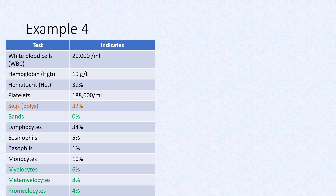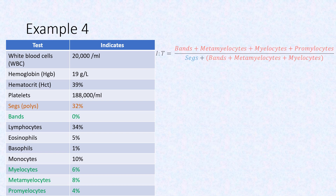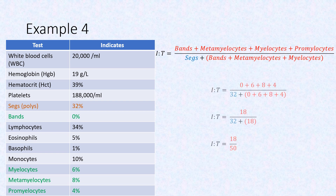Calculate the IT ratio for example 4. Recall the formula: immature neutrophils divided by total neutrophils. From the CBC, we need the SEGS and the immature neutrophils — bands, myelocytes, metamyelocytes, and promyelocytes. The total percentage of immature neutrophils is 18 and the total number of neutrophils is 50. Dividing these gives an IT ratio of 0.36.